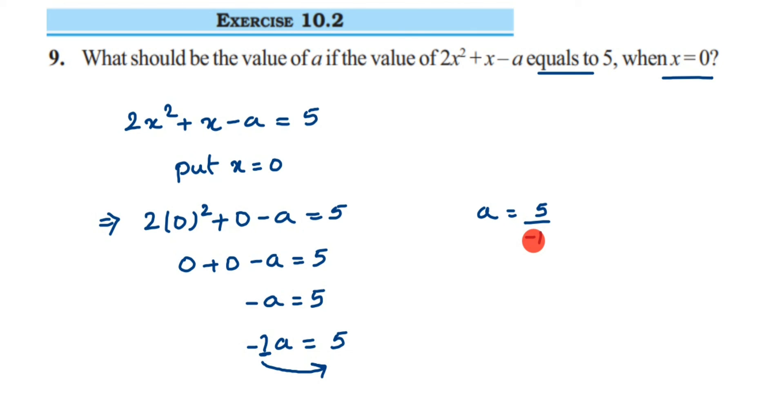But to just avoid confusion and all, we write the negative sign in the numerator. So here a will be equal to -5, minus 5 upon 1, or you can just write simply as -5. That's it. And the negative sign will not going to change.